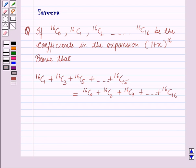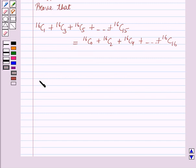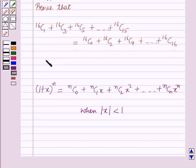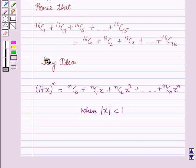Now before starting the solution of this question we should know a result. And that is: (1 + x) raised to power n is equal to nC0 plus nC1 times x plus nC2 times x squared plus so on up to nCn times x raised to power n, where the absolute value of x is less than 1. This result will work out as a key idea for solving this question.